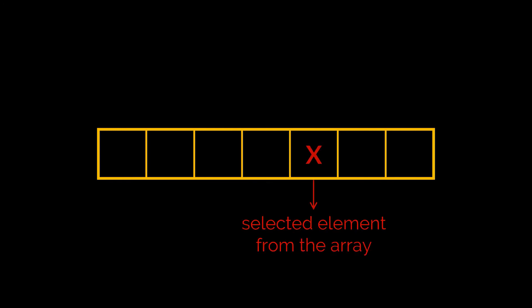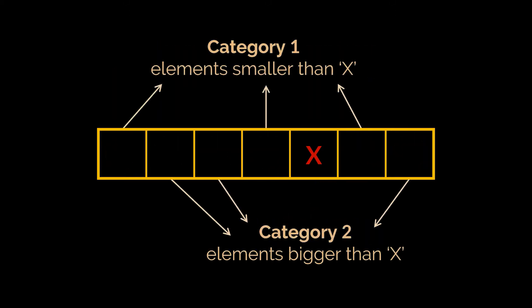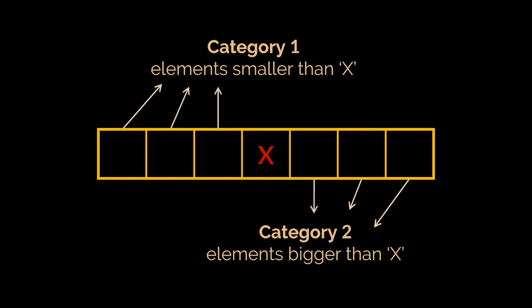In short, what this algorithm does is it selects an element in the array, then groups the remaining elements into two categories — whether they are bigger or smaller than the selected element. By doing that, we actually determine the final position of the selected element in the sorted array. For example, if we had seven elements and knew that exactly three elements are smaller than a particular element and another three are greater, then that element should be located exactly at the center of the array.